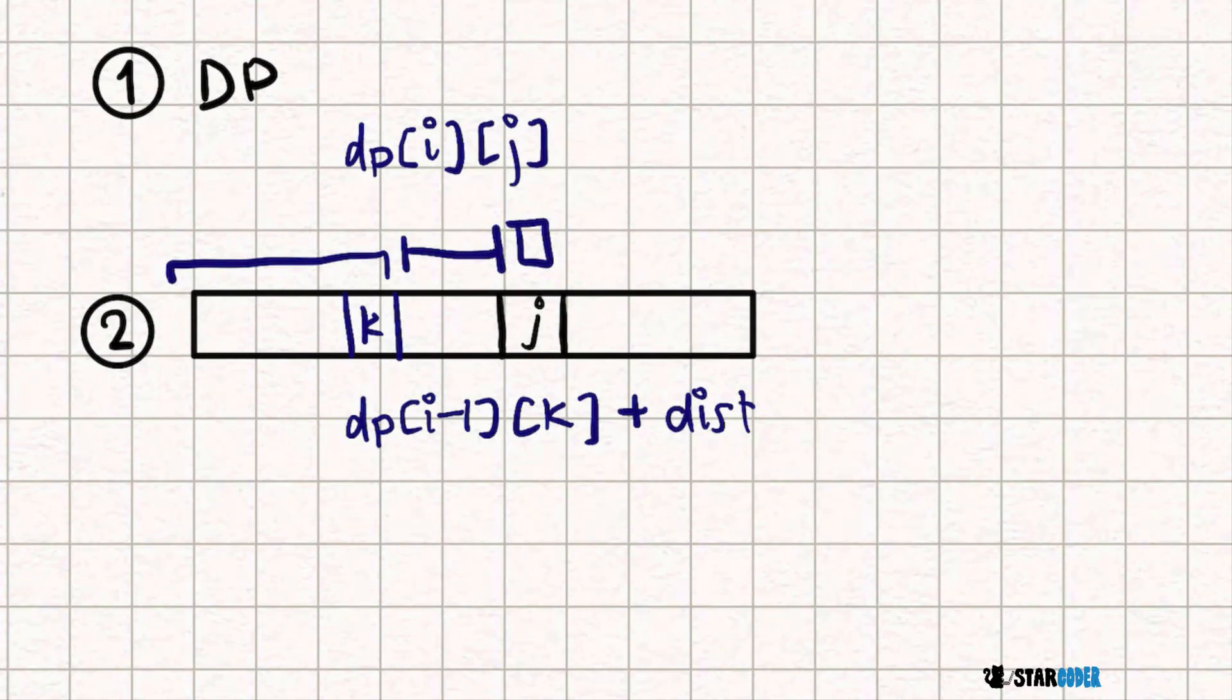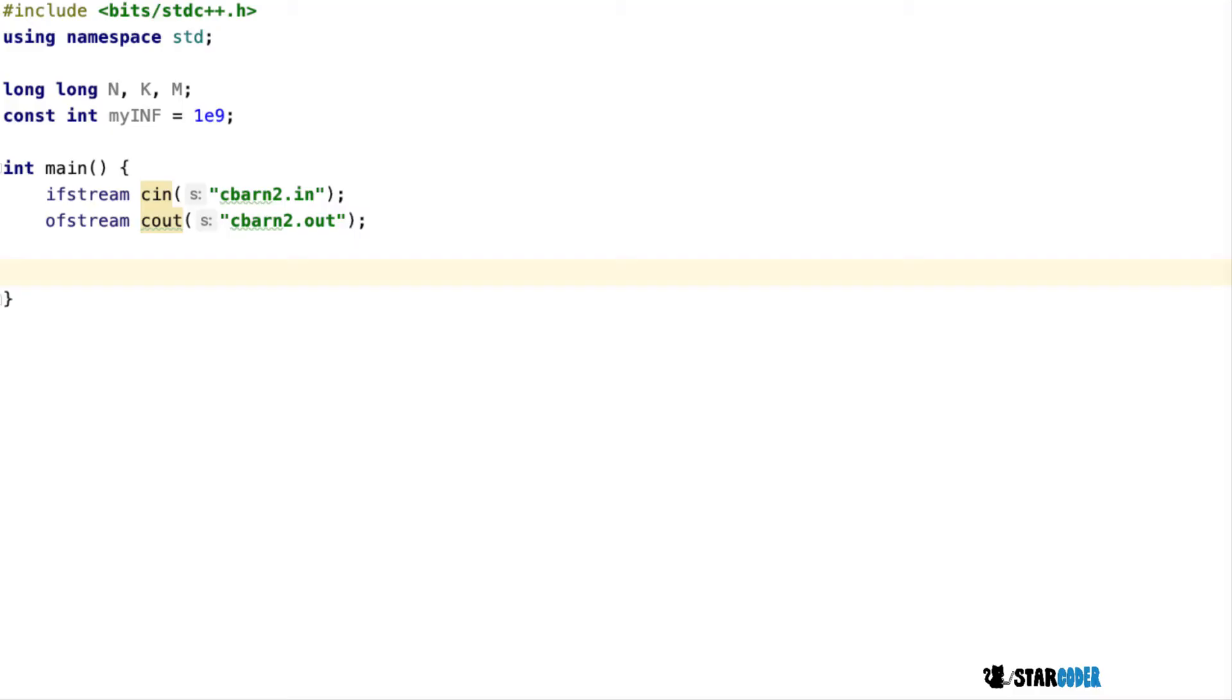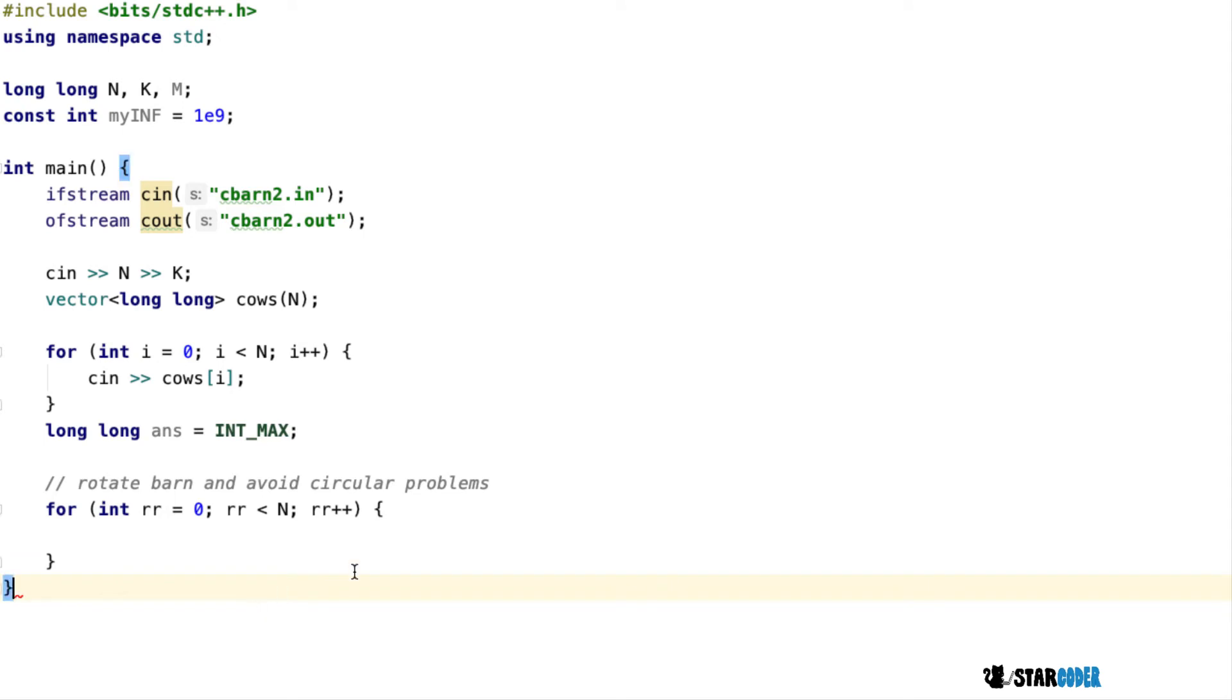Let's look at the code for this question. I've set up the program here, and we read in the input. Then I loop through all the different rotations of the barn, where R is the current rotation, and we have a vector called current_cows representing the rotated version.